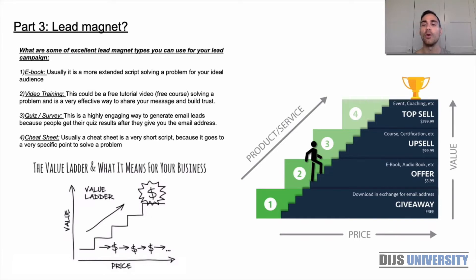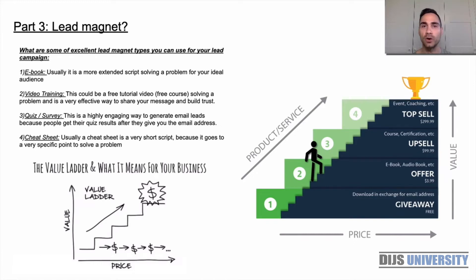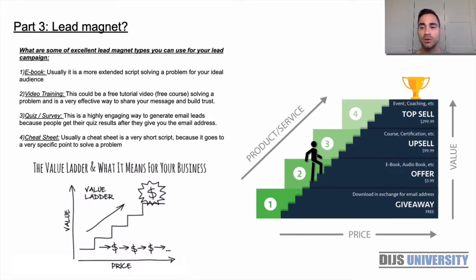You always start with the giveaway — free valuable content to grab their attention, help them for free, and collect their email address. Later on in the back end of your email marketing, you start giving more value and introduce your products and services. There are four steps: first a free ebook, then a small offer like $3.99, and then you go higher and higher in price — essentially searching for buyers from your email list.